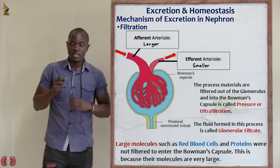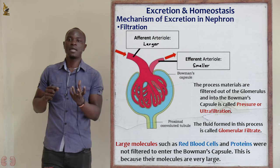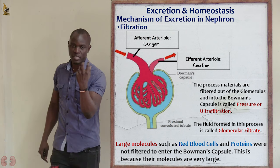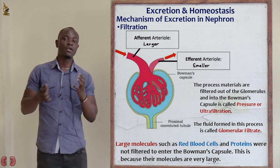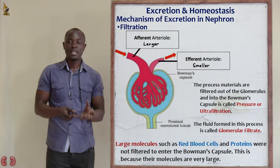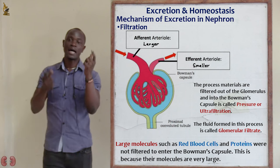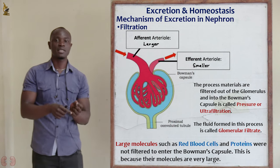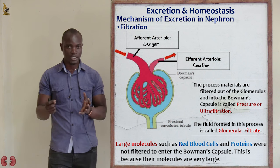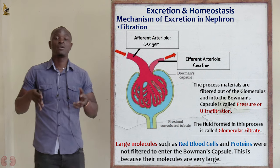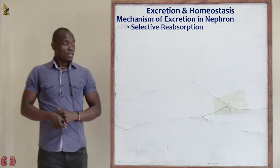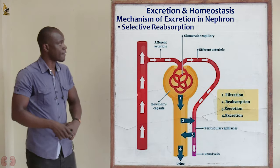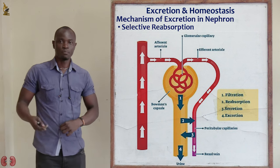The filtrate coming out of the glomerulus and into the Bowman's capsule is referred to as the glomerular filtrate. That fluid which is coming from the glomerulus and into the Bowman's capsule is referred to as the glomerular filtrate. Now let's go to the next subtopic, which is selective reabsorption.